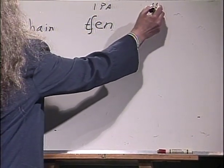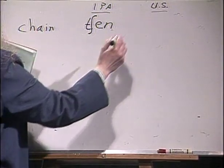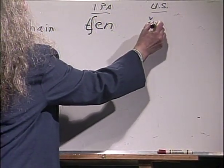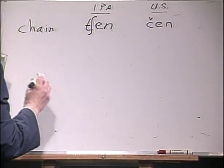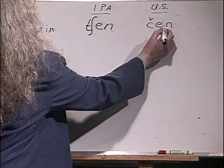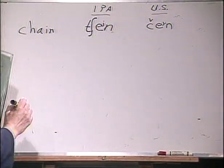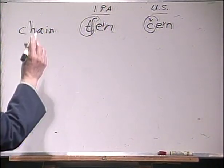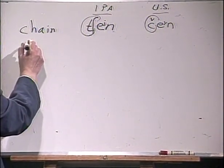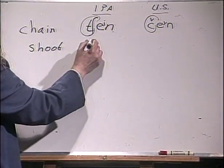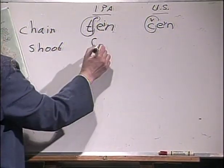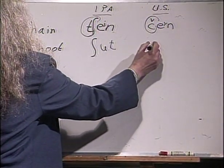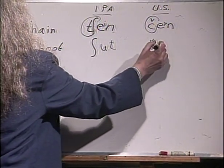But some American linguists will use a C with what's called a hat check over it for that CH sound. The SH as in 'shoot': strict IPA will use that long SH symbol, then the O vowel, then a T. In the Americanist system, it'll be an S with a hat check over it, then a U and a T.